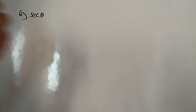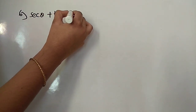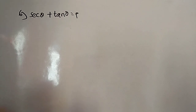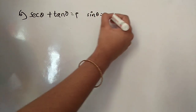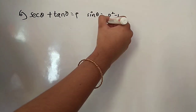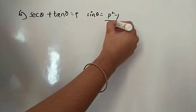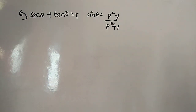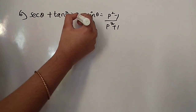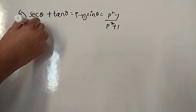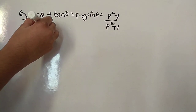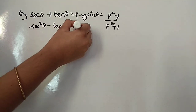Sixth question: if secant theta plus tan theta equals p, we have to show that sin theta equals (p squared minus 1) divided by (p squared plus 1). We take this as equation 1. We also know the identity: secant squared theta minus tan squared theta equals 1.